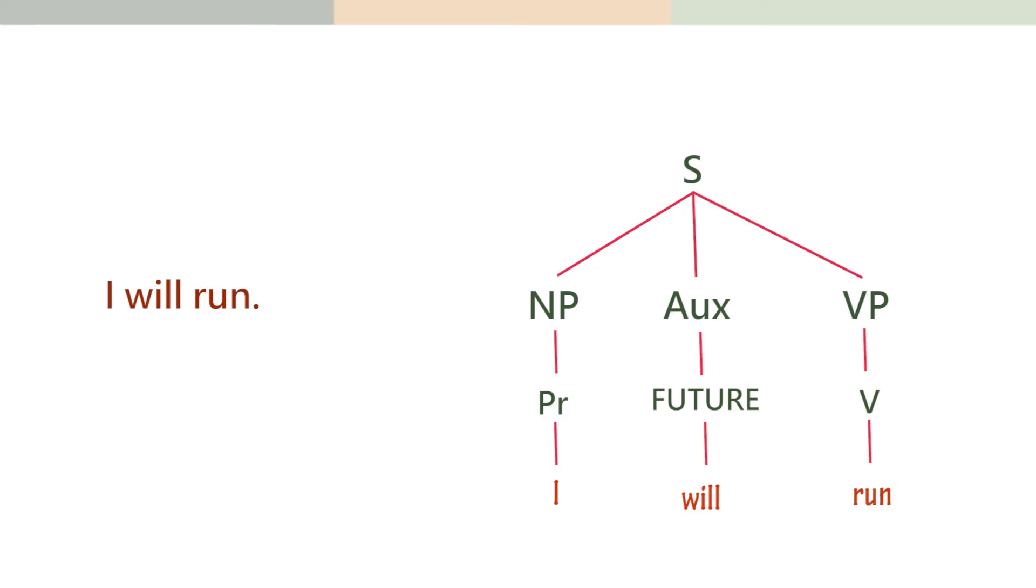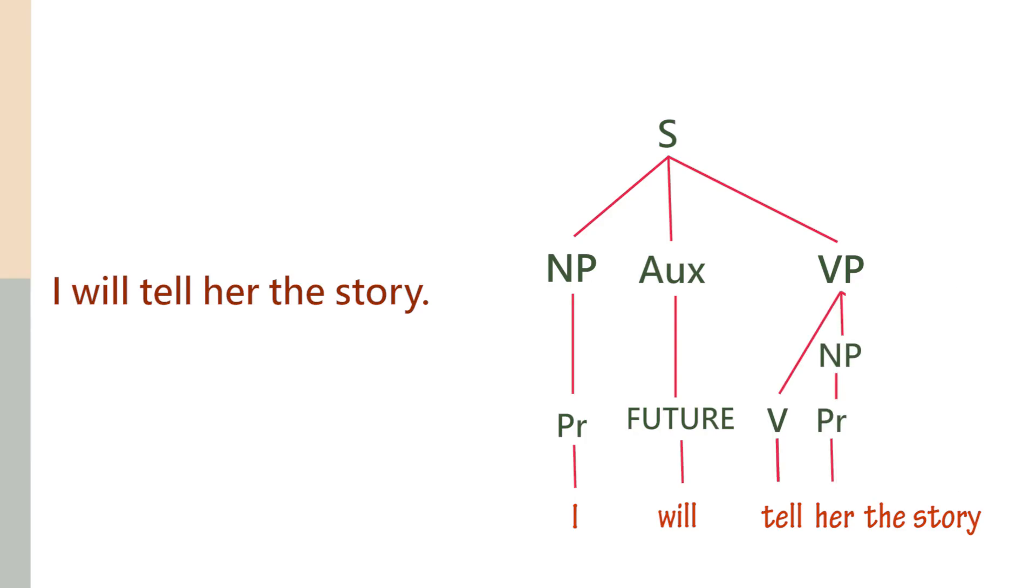When we're talking about phrase structure rules, we need to write the rules not just for the sentence but for more phrases within the sentence. Each of those phrases needs to be accounted for with phrase structure rules. Sentences in English are typically more complicated. For example, 'I will tell her the story.' If I ask you to draw the tree diagram, you can always start at the top by writing the sentence: NP Aux VP. Alternatively, you could start at the bottom by labeling each word. You already know that I is a pronoun, will is an Aux.